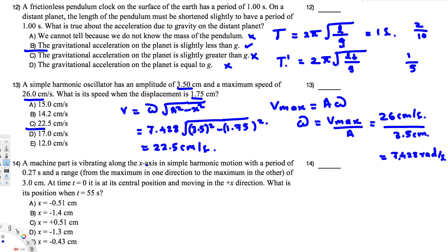The third question: a machine part vibrates along the x-axis in simple harmonic motion with a period of 0.27 seconds and a range of 3 centimeters. At t = 0, it is at its central position and moving in the positive x direction. What is its position when t = 55 seconds?